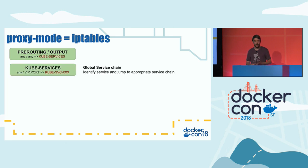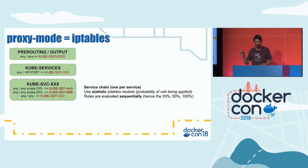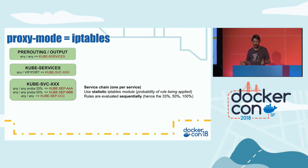The kube-services chain matches traffic with existing services using rules that match the service VIP and port. If it matches, traffic goes to the service chain. For each service there is a chain that relies on an IP tables module called 'statistics' — not a very common module — which applies a rule with a certain probability. You hit a rule and have a probability to actually use it; otherwise you continue down the chain.